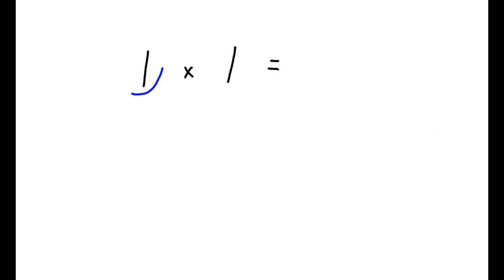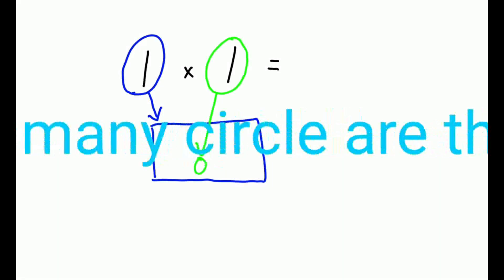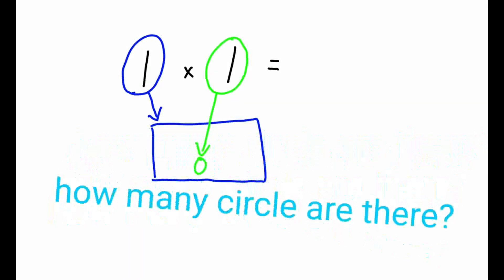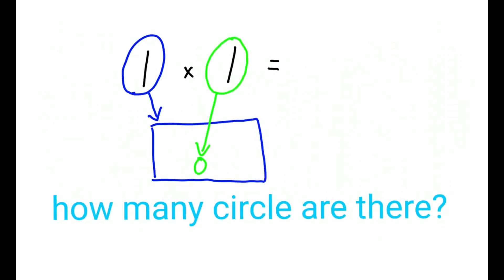Let us start with something easy to understand. We can imagine multiplication as a box and circle problem. The first number means the number of boxes, and the second number means the number of circles inside each box. So 1 times 1 means there is one box, and each box has one circle, and the answer is the total number of circles, which is 1.